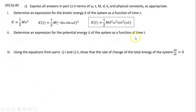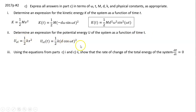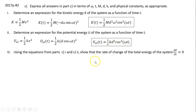Part C number two: determine the expression for potential energy U of the system as a function of time. Potential energy equals one-half kx². We know what x is, so plugging in, the simplified expression is U = one-half k·d²·cos²(ωt). Now using these two equations, show that the rate of change of total energy dE/dt equals zero.